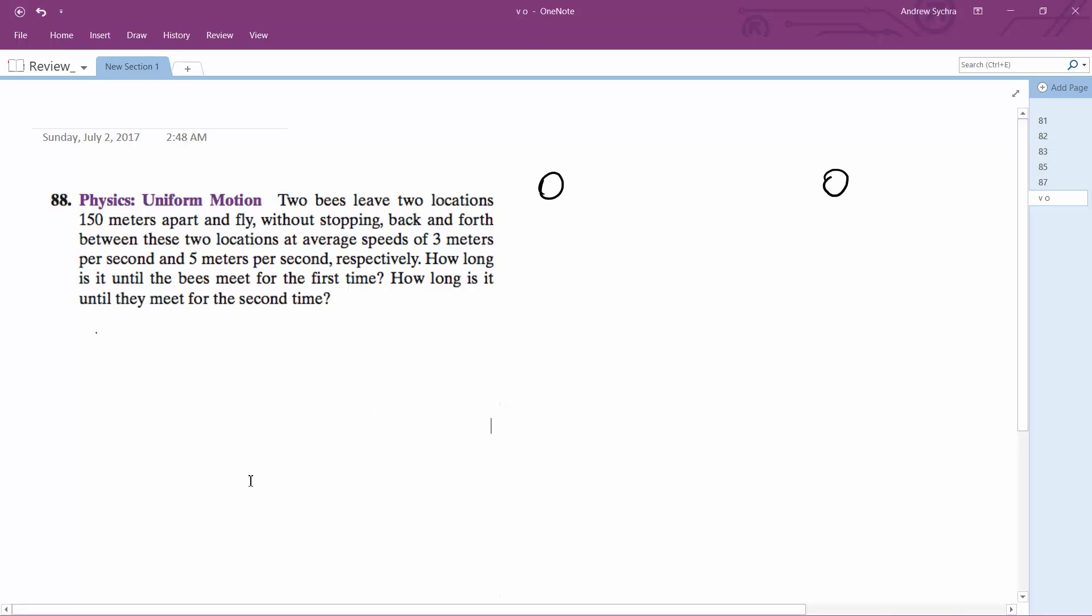So we've got two bees. One flies at 3 meters a second. The other flies at 5. This is 150 meters apart. So here's the 3 meter bee. So initially they're going to meet somewhere like here. And then they want to know when they'll meet again.